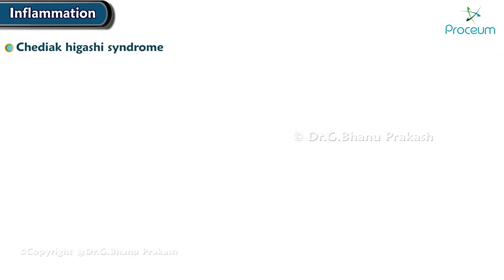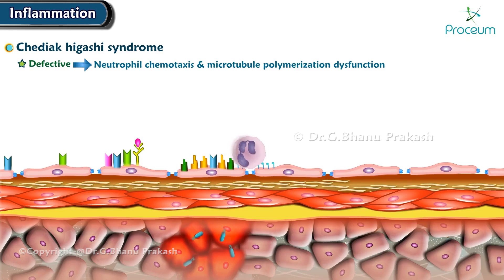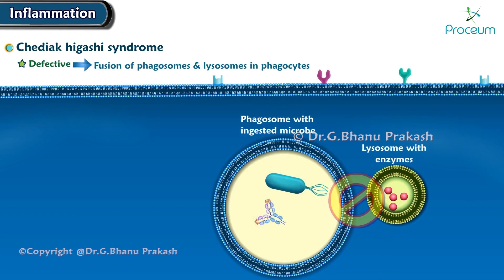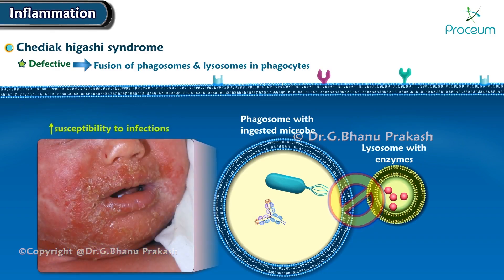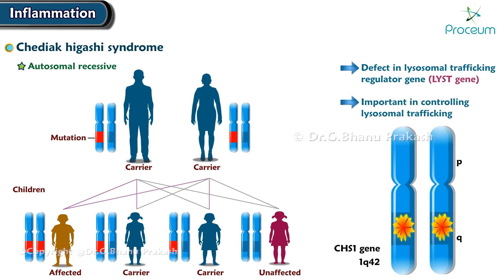Chediak-Higashi syndrome is a defect in neutrophil chemotaxis and microtubule polymerization dysfunction, leading to defective phagolysosome formation. The defective fusion of phagosomes and lysosomes in phagocytes leads to increased susceptibility to infections. There is also an autosomal recessive defect caused by a defect in the lysosomal trafficking regulator gene, or LYST gene, which is important in controlling lysosomal trafficking.